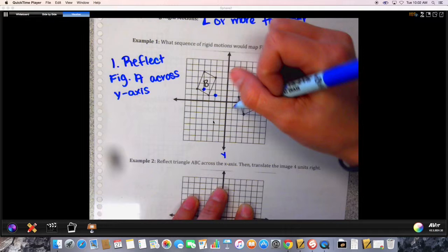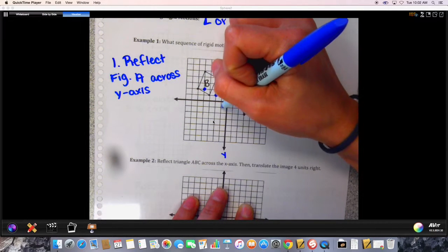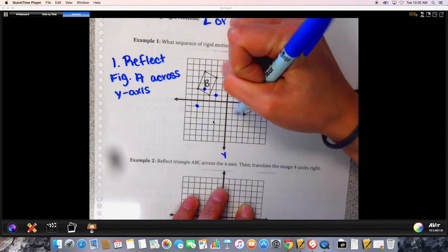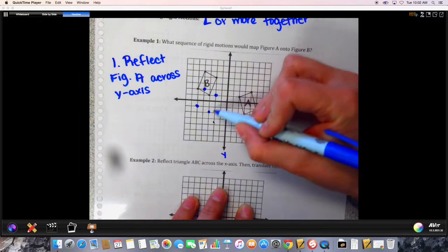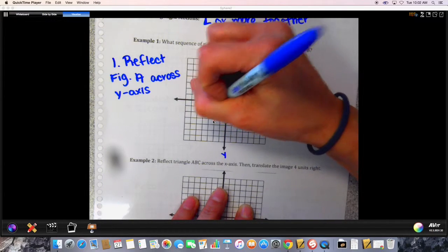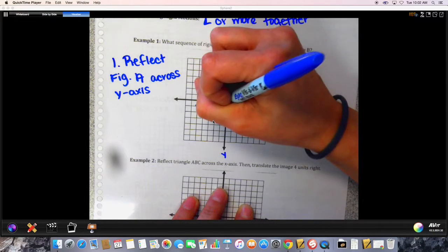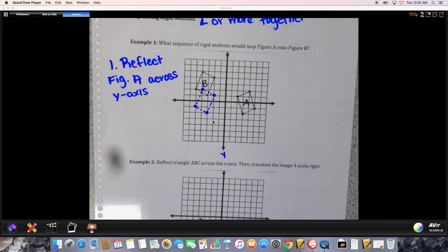This one's five to the right so we would go five to the left, one two four five. And then this one's three to the right so we'd make it three to the left. So if you reflect this guy across the y-axis, this is what you get.